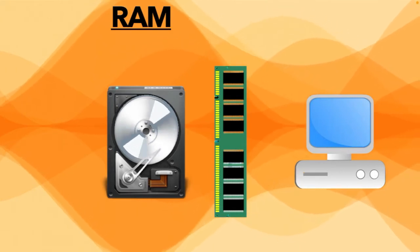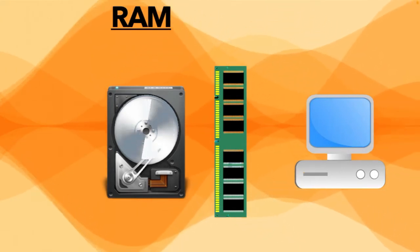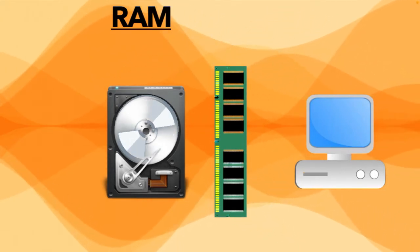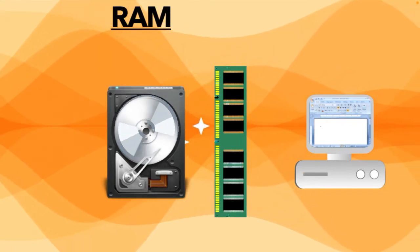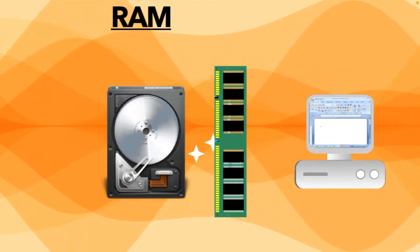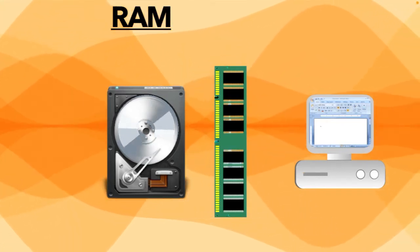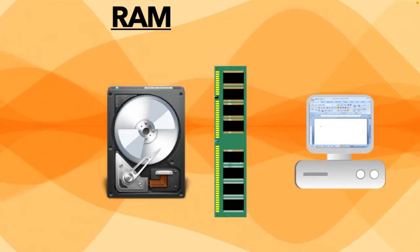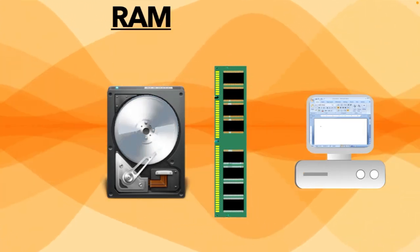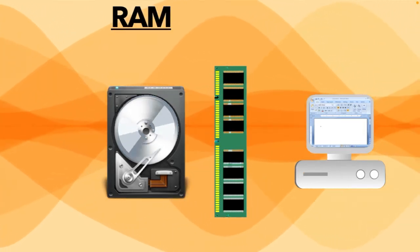For instance, when you open a program such as Microsoft Word, data temporarily goes from your hard drive to the RAM, which then holds the data for the CPU to process.